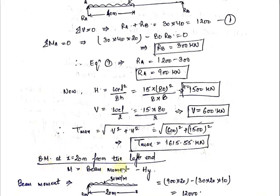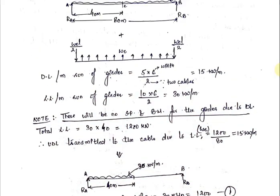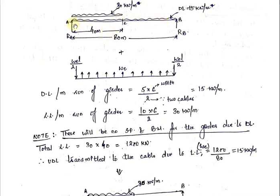Now we have to find the bending moment and shear force at a section 20 meters from the left end. In the previous video we derived the formula for bending moment for the two-hinged stiffening girder: bending moment equals beam moment minus H·y. Beam moment means the moment at that section due to external loading only. We don't consider the dead load, so the only external loading is 30 kN per meter. We have to find the bending moment at the section 20 meters from the left end, and we will take the left part of the section.